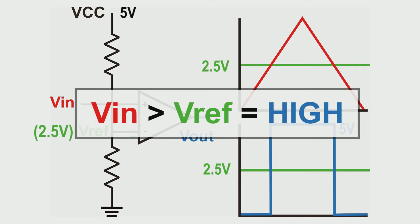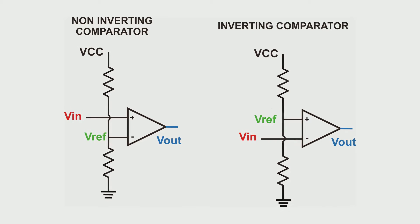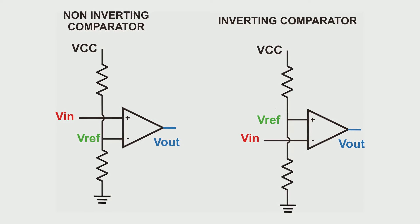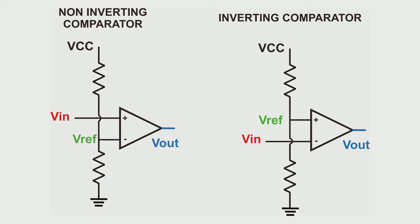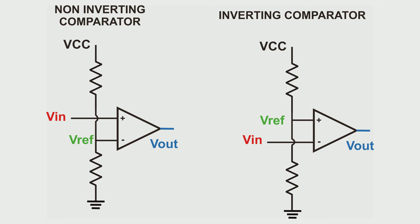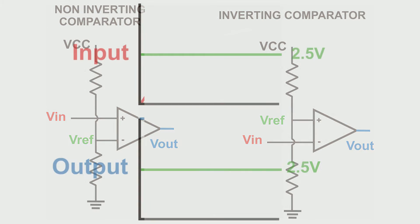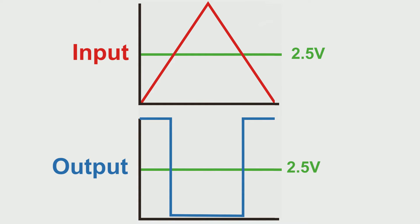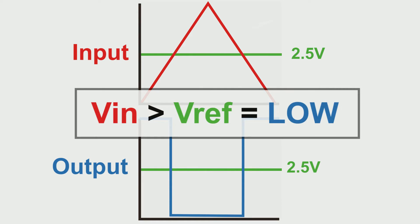How about the inverting comparator? Like its name suggests, you can guess how it works — the inverting comparator will invert the output. It will output low voltage or zero if the input voltage is more than the voltage reference. To do this, we swap the voltage input and reference pins: the input voltage is connected to the negative input and the voltage reference to the positive pin. Now every time the input voltage is more than the reference, the output goes low, and when input is less than reference, it outputs a high state.